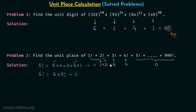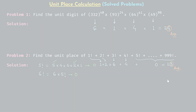Now we add all the unit digits: 1 + 2 + 6 + 4 + 0. 1 + 2 = 3, 3 + 6 = 9, 9 + 4 = 13, 13 + 0 = 13. So we get 3 at the unit place, and this is our answer. The sum of all these factorials from 1! to 999! will have 3 at the unit place.